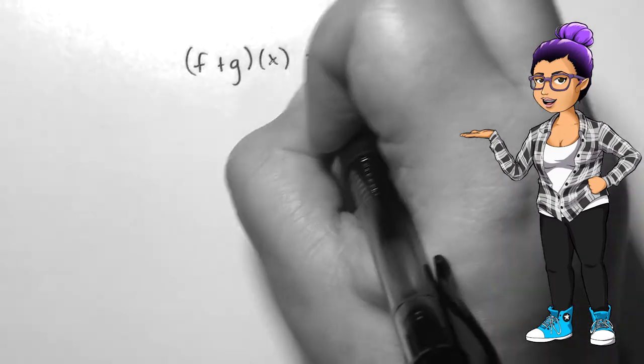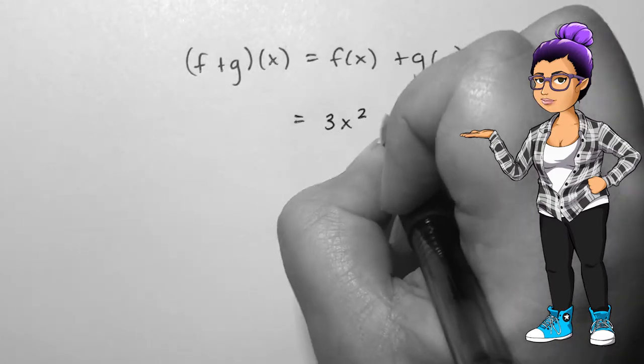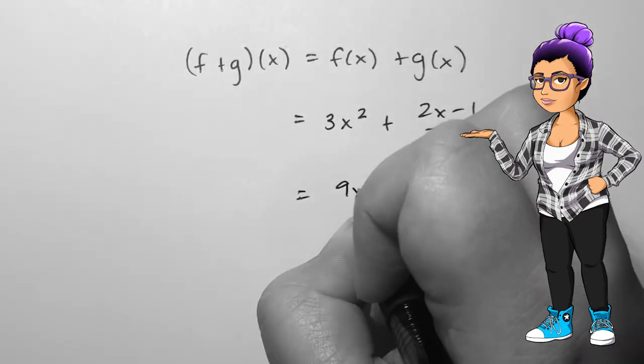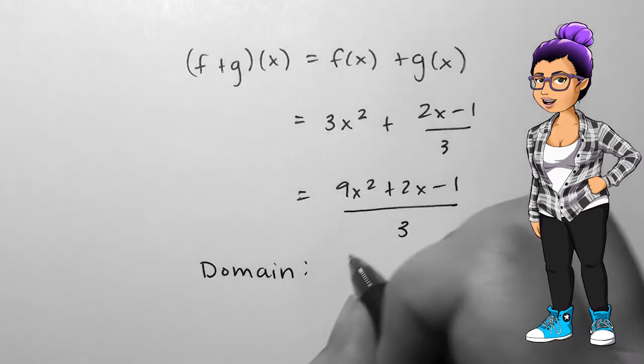To find the domain of the function created by a sum, you should add the two functions and simplify, then find the resulting domain. In this case, the domain is all real numbers.